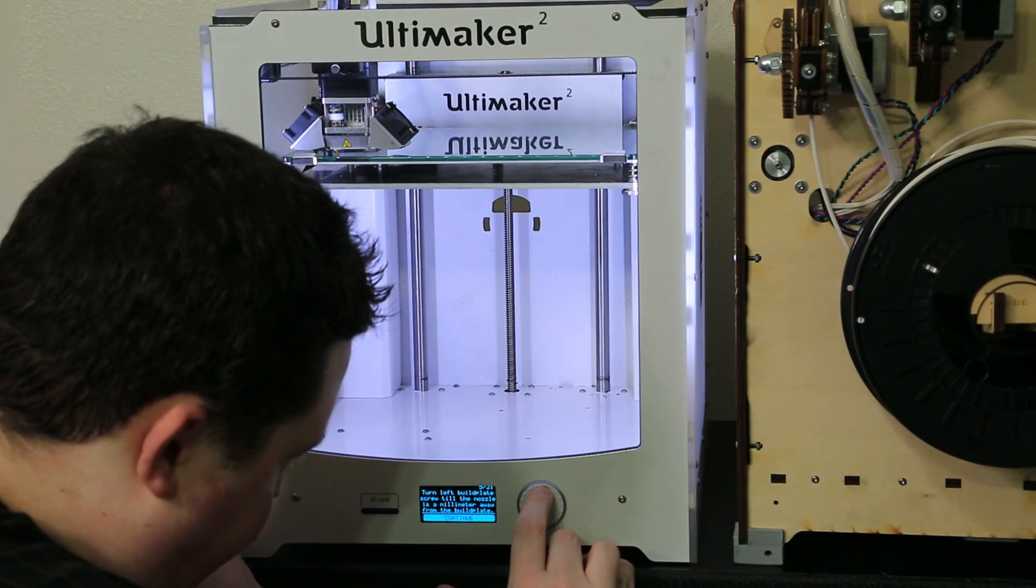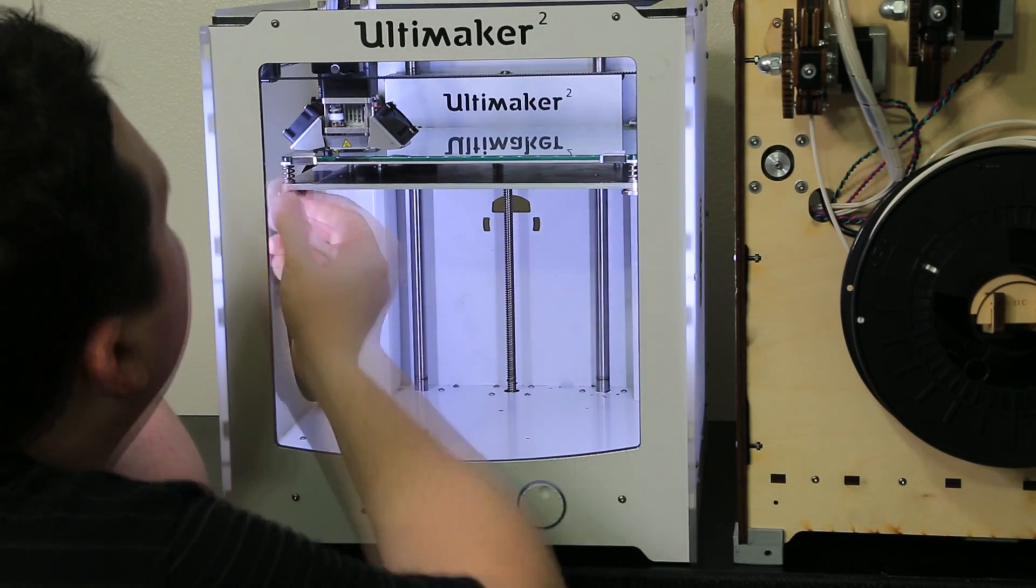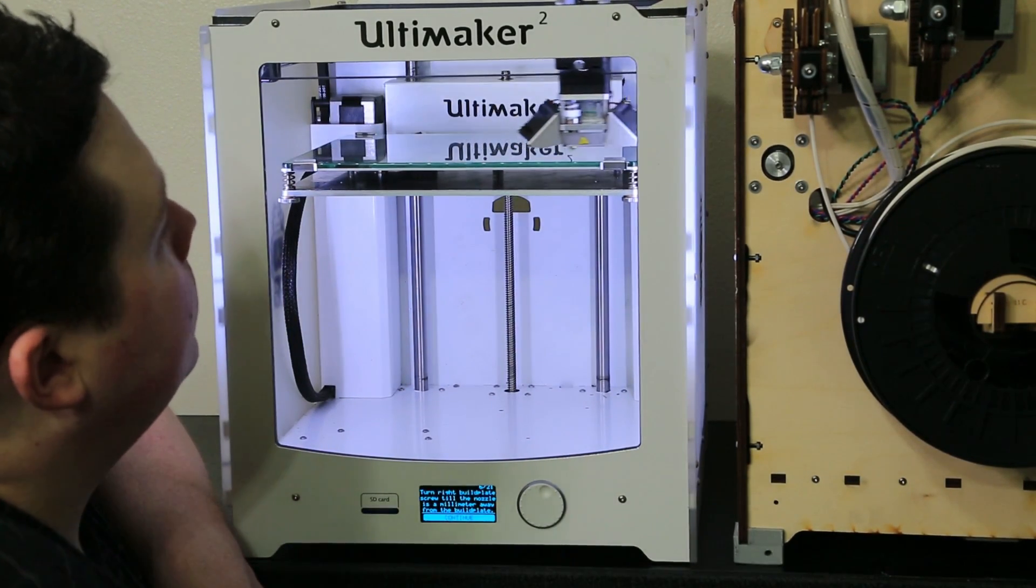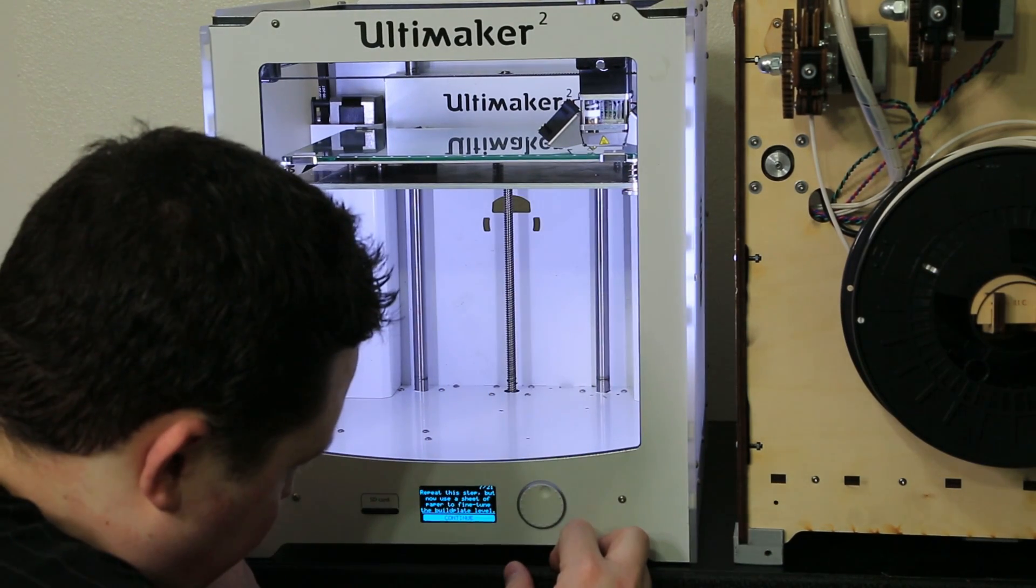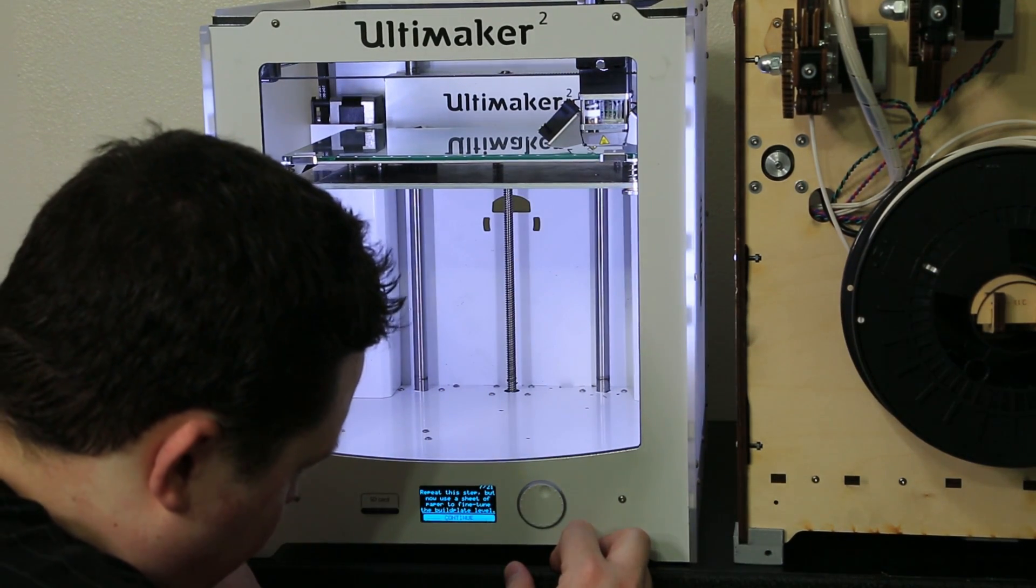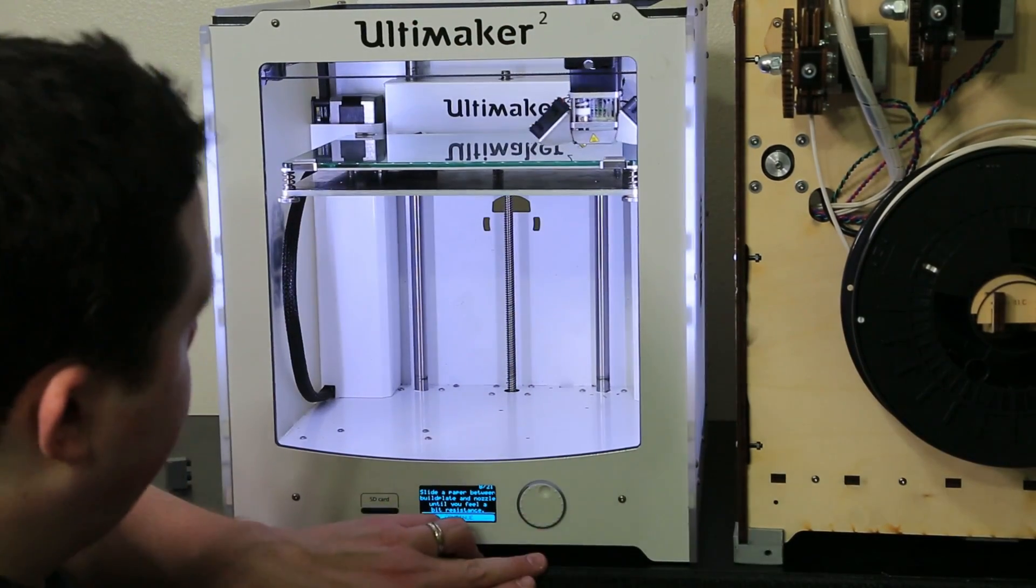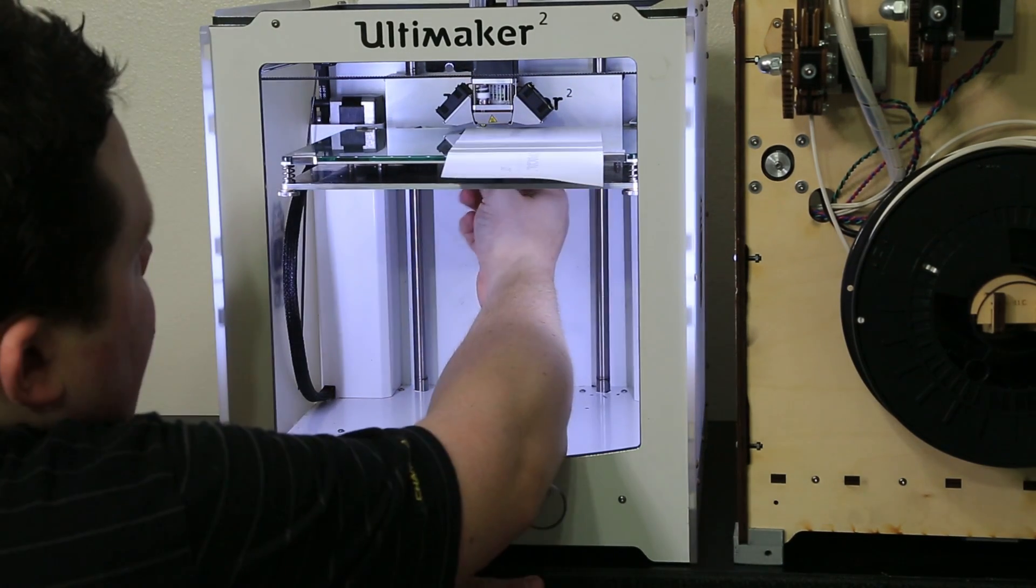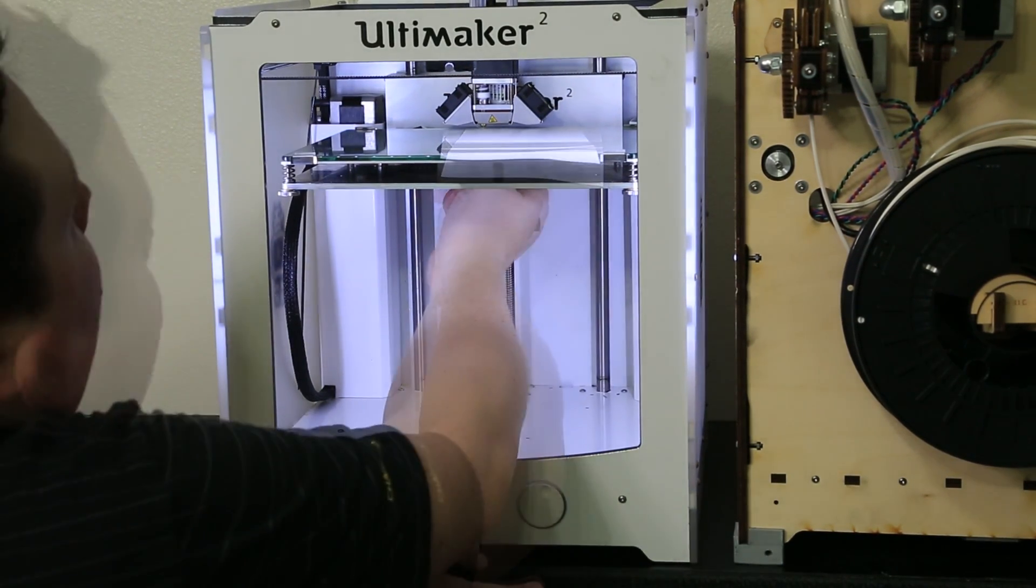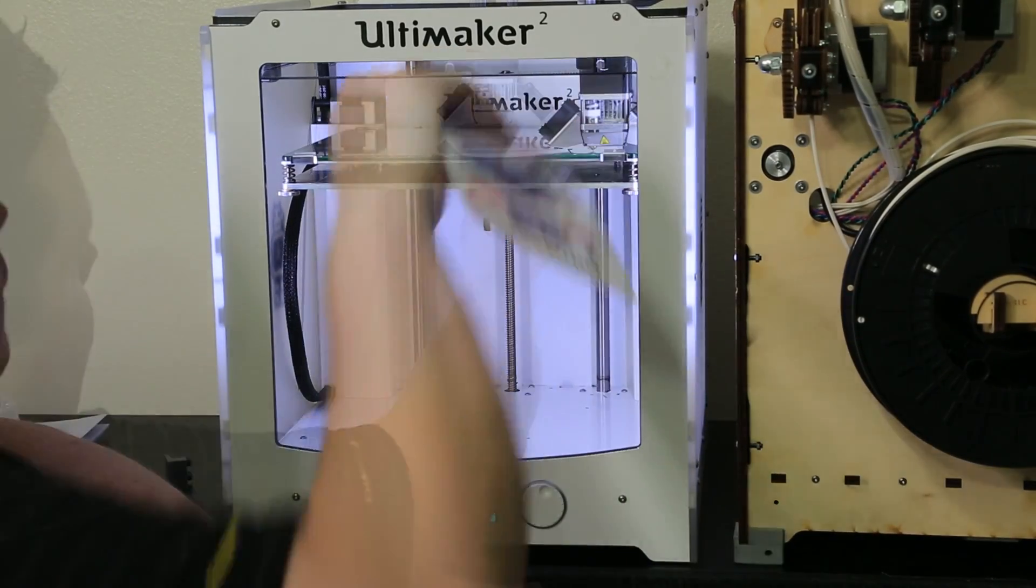Okay, turn the left build plate screw till the nozzle is a millimeter away from the build plate. Okay. Okay, repeat this step but now use a sheet of paper to fine tune the build plate levels. We're good. It's got one screw on the bottom that controls the back. Oh this is such a better system than the V1. We're good.